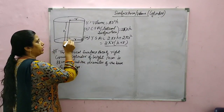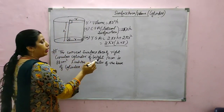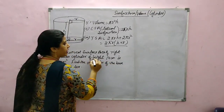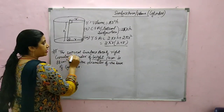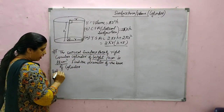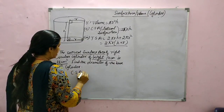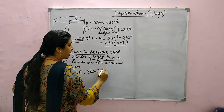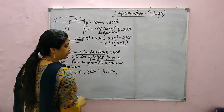It is called a right circular cylinder because it is perpendicular. The height is given as 14 cm and the CSA is given as 88 cm square. First of all, write down the dimensions: CSA is 88 cm square and height is 14 cm. We have to find out the diameter.